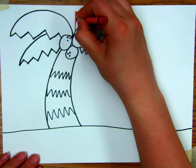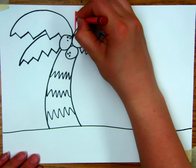I'm gonna use different colors for every letter. My A is on top of the coconut tree.